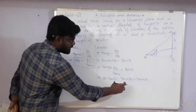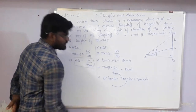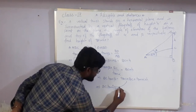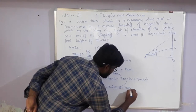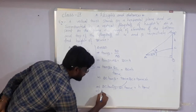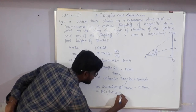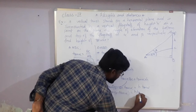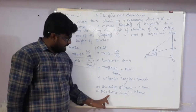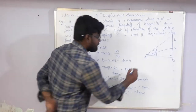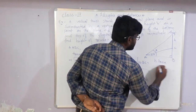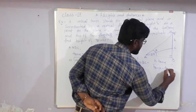Substituting AB = BC / tan alpha into the equation: tan beta × (BC / tan alpha) = BC + h. Rearranging: BC × tan beta - BC × tan alpha = h × tan alpha. Taking BC as common: BC(tan beta - tan alpha) = h × tan alpha. Therefore BC = h × tan alpha / (tan beta - tan alpha). That is the height of the tower.